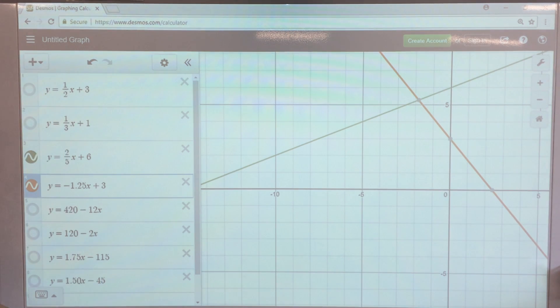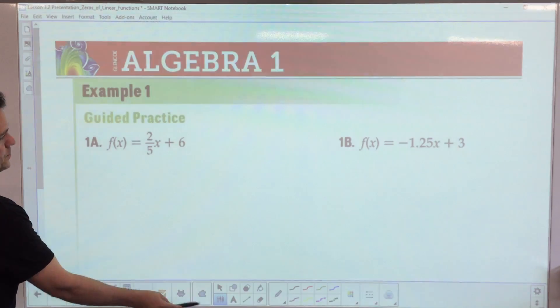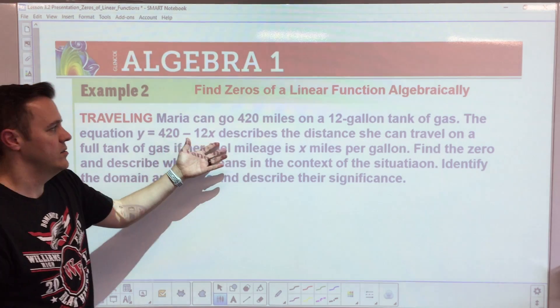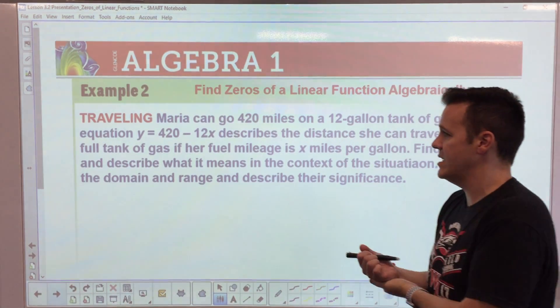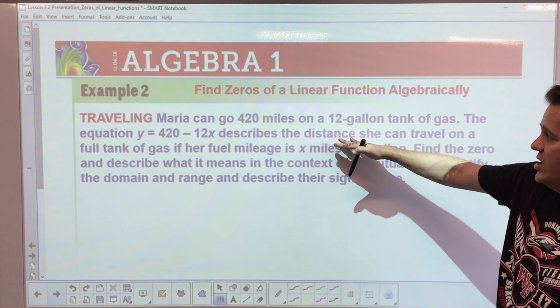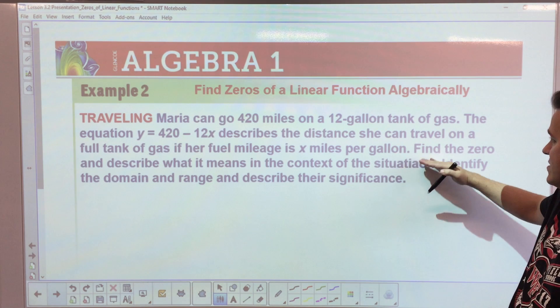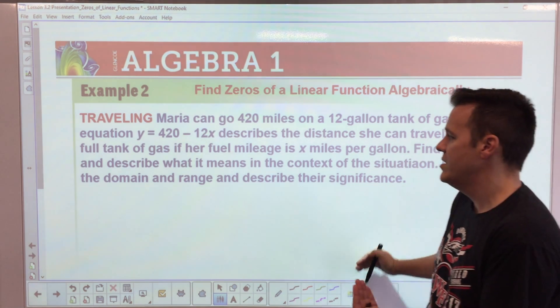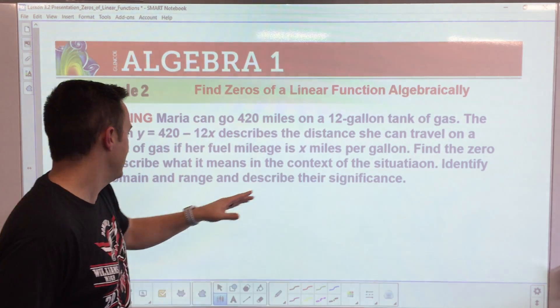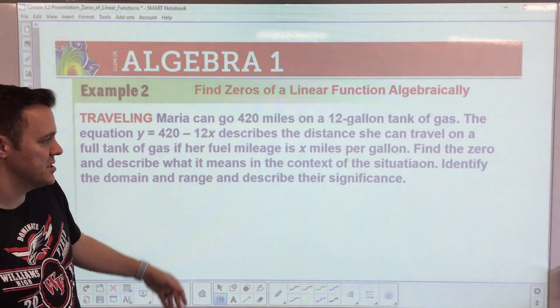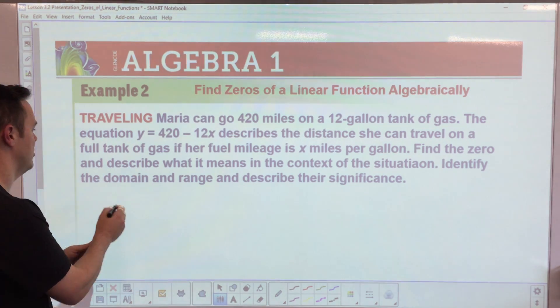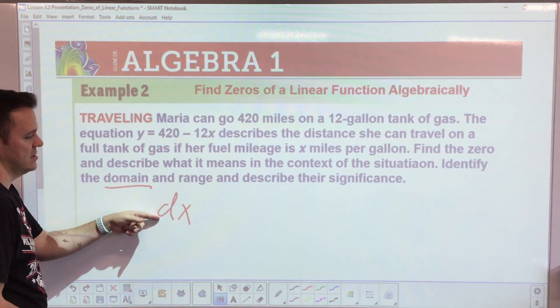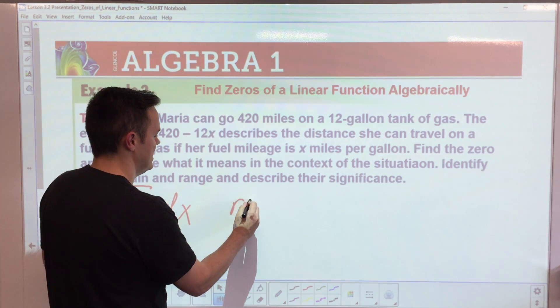Next, pretty simple. Maria goes 420 miles on a tank of gas. Here's the equation that describes the distance. Find the zero and describe what it means in the context of the situation. Finally, identify the domain and range and describe their significance.